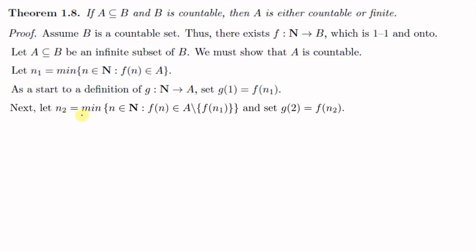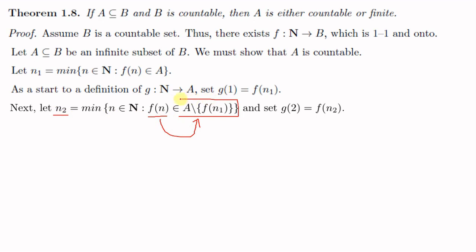Now let n2 equal to the minimum of the set of all n in N such that f(n) is an element of A minus {f(n1)}. Here n2 is the smallest value of n such that f(n2) is in A minus {f(n1)}. Similarly, we define n3 as the minimum of the set of all n in N such that f(n) is an element of A minus {f(n1), f(n2)}, and we set g(3) equal to f(n3), and so on.